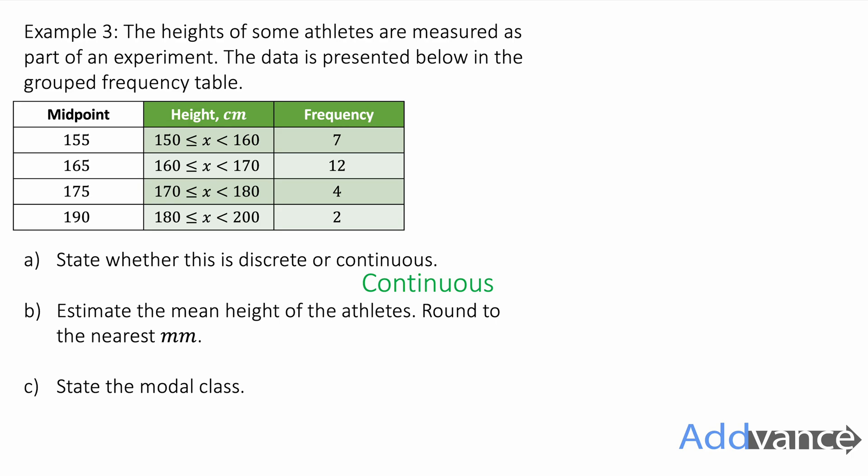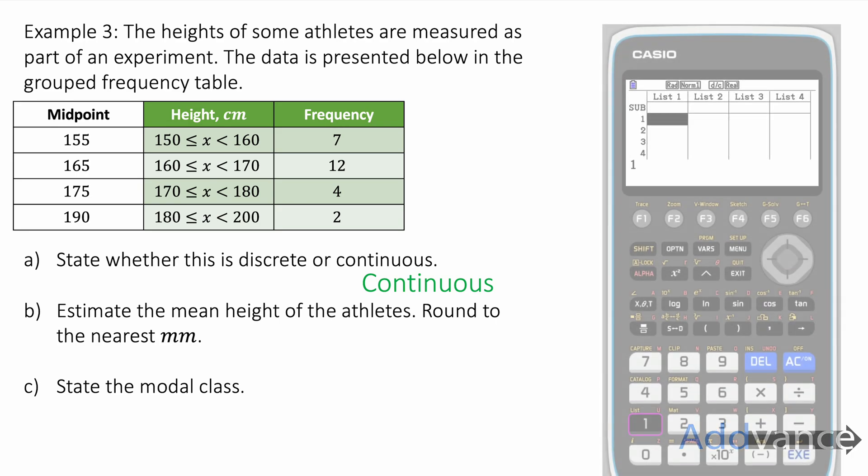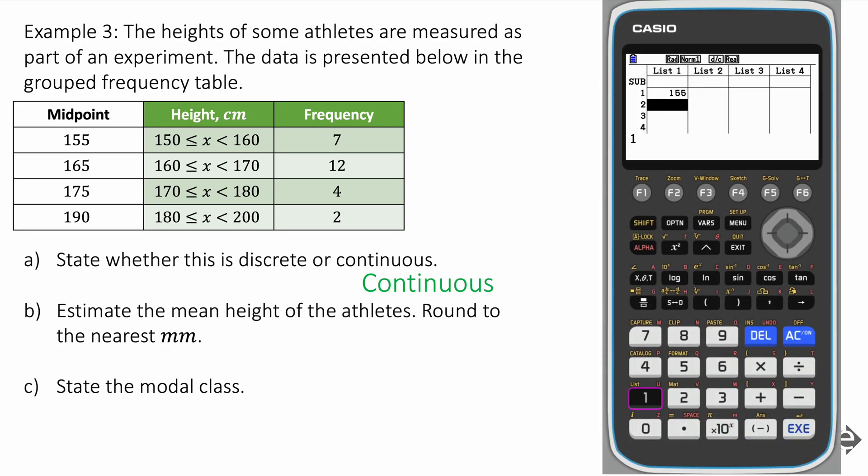And I've added a midpoint column, as I was saying. And again, the midpoint is just halfway between the small number in the group and the big number in the group. Halfway between 150 and 160 is 155. I had to do that myself, using my own brain. I'm going to put that data into the calculator, and we're going to put the midpoints into list one. Once you put all midpoints into list one, we're going to go to frequency, and you're going to put the frequency into list two.